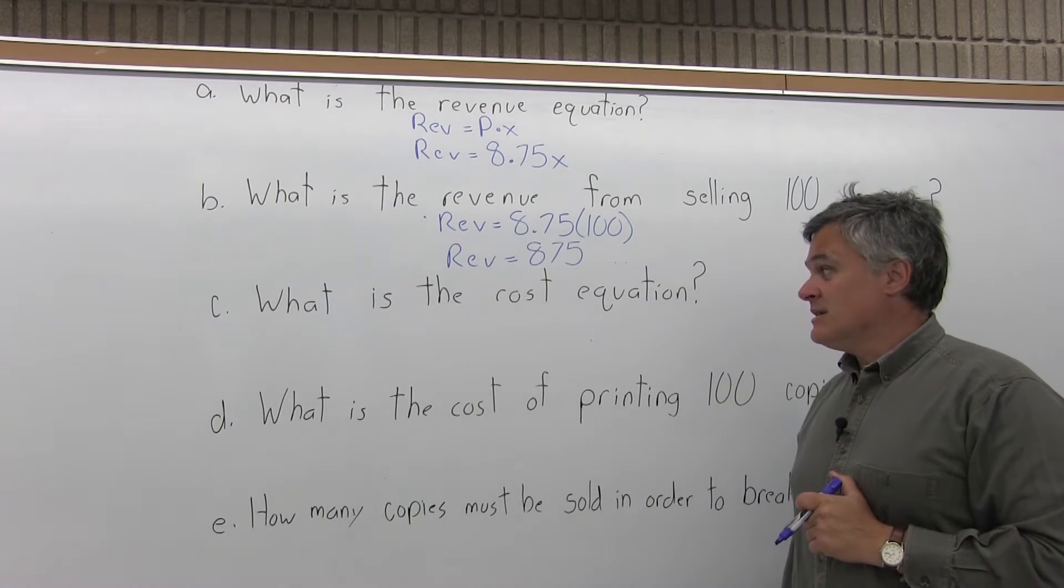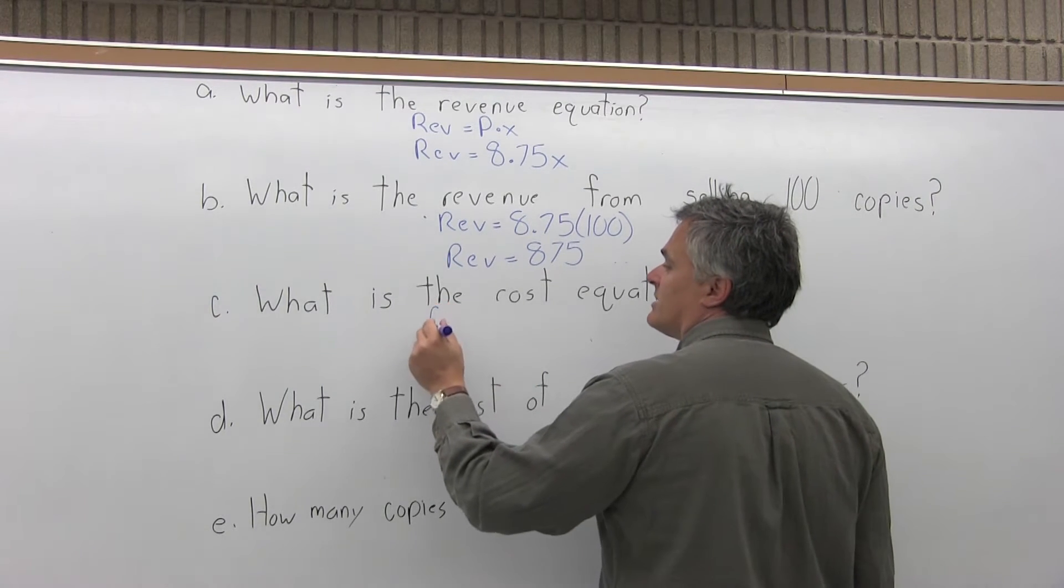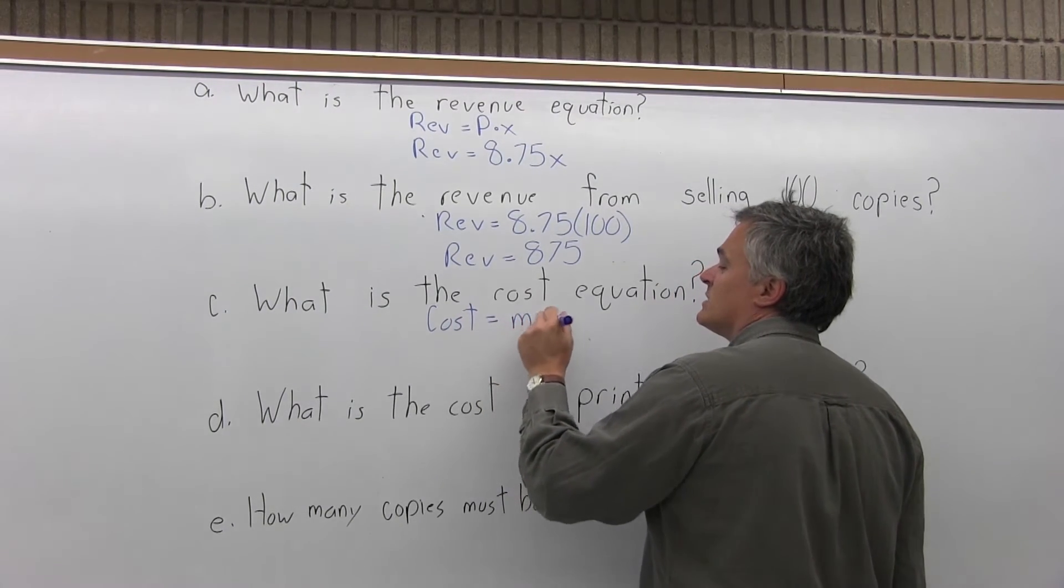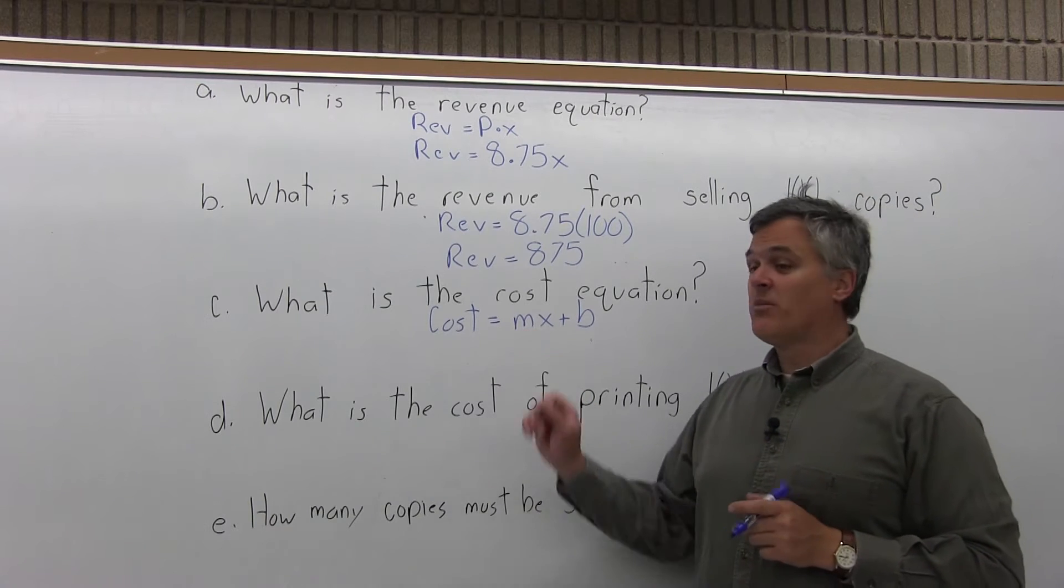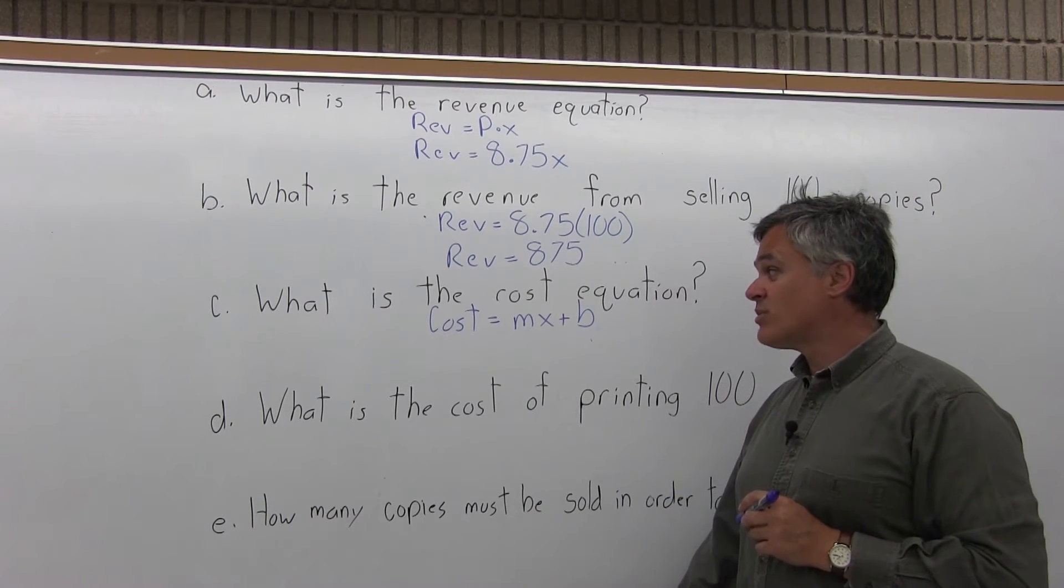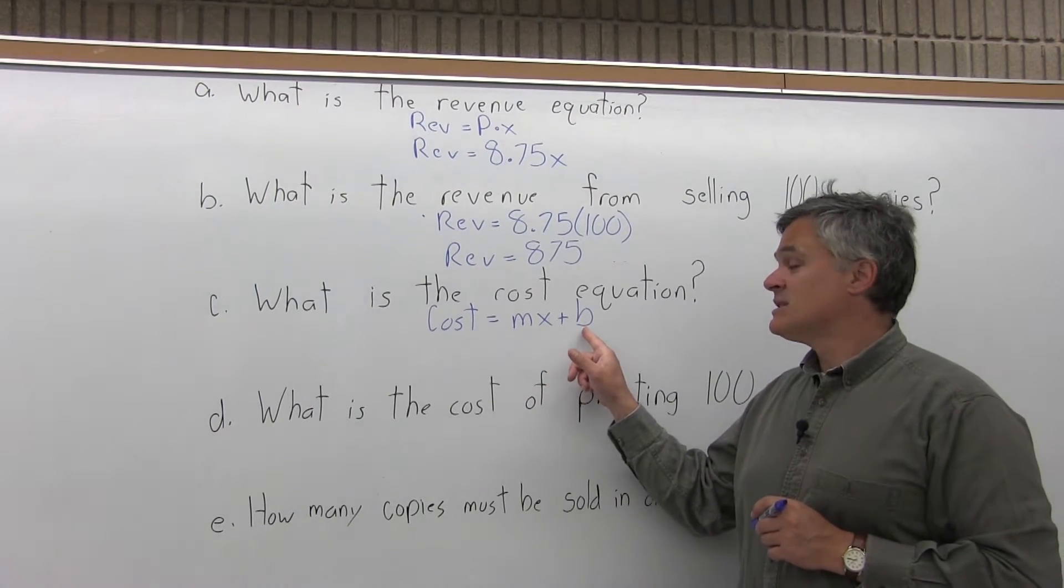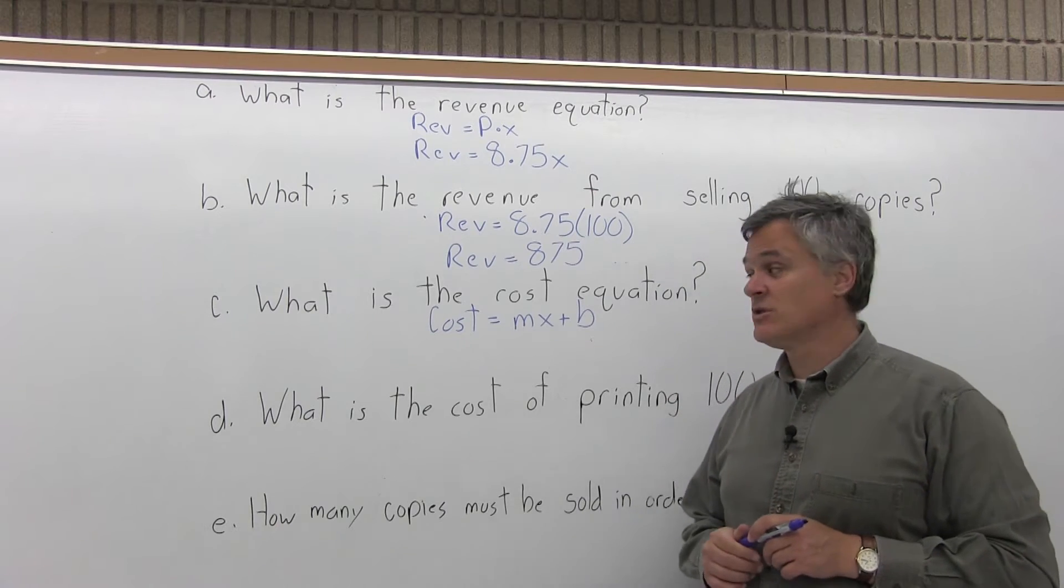Part C, what is the cost equation? The cost equation is MX plus B. M stands for marginal cost or the cost per item, X represents the number of items, and B is the fixed cost which means the cost to stay in business even if no items are sold.